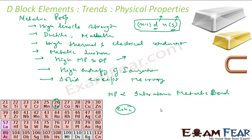There are some exceptions — for example, zinc has a low melting point. The electronic configuration of zinc is [Ar] 3d¹⁰ 4s². Since 3d is totally filled, the d orbital doesn't take part in metallic bonding; only the 4s orbital does. So there are fewer electrons for bond formation, giving a lower melting point. Note: zinc is not even considered a true transition metal because its d orbital is completely filled.